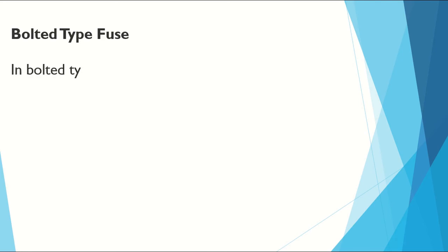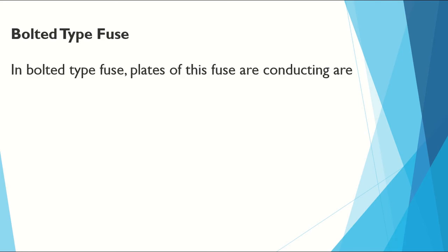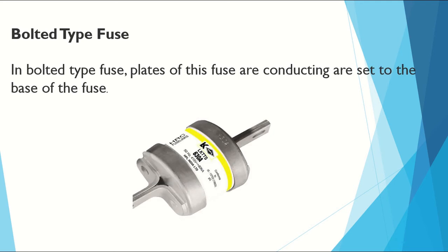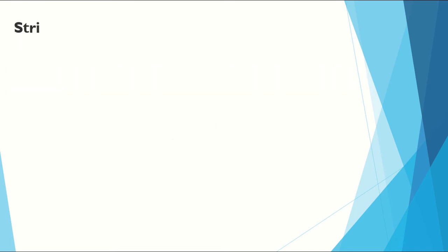Bolted type fuse. In bolted type fuse, the conducting plates of this fuse are set to the base of the fuse. An example shown is a 630 amps, three-phase, 80kA, 50Hz fuse.